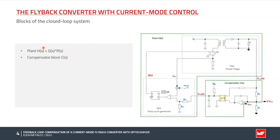Here we can see the flyback converter power stage with an optocoupler-based compensator and a peak current mode duty cycle generator, all together forming a closed-loop system to regulate the output voltage of the converter. We will not go into all the details here, but we'll focus on the Laplace transfer functions and input/output variables for each block. The plant control-to-output transfer function H(s) is formed by the duty cycle generator block G(s) and the power stage with transfer function P(s).